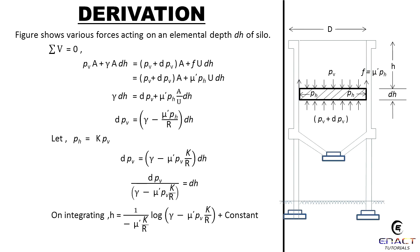dpV = (γ - μ'pH/R)dh. Let pH = KpV. dpV = (γ - μ'pVK/R)dh. dpV/[(γ - μ'pVK/R)] = dh. On integrating: h = (1/(-μ'K/R))log(γ - μ'pVK/R) + constant.